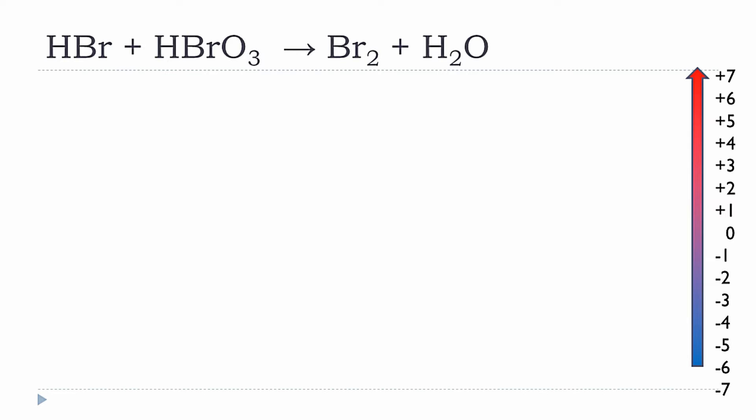The next step is to determine the oxidation numbers of the different elements present in the reactants and products. If you are not familiar with the rules, I would advise you to watch my video on how to determine oxidation numbers. I have written the reaction slightly differently: on the product side, instead of writing just Br2, I have written two separate Br atoms — one coming from hydrogen bromide and the second from hydrogen bromate.